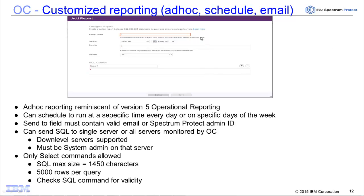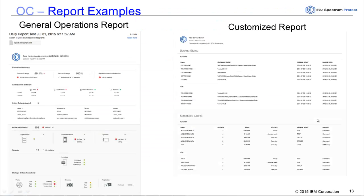Once you've filled out the add report form, you simply click save. On page 13 there are two examples of reports. On the left-hand side is the general operations report, introduced in a previous version of the operations center. Here's an example of a new customized report where we've run two SQL queries — a server showing our backup status and the scheduled clients.